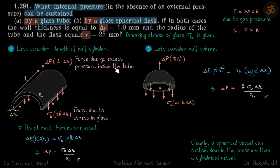This is the force due to excess pressure inside the tube. Now the other force is due to the material. There is stress in this material which is preventing this hemispherical tube to fly away.